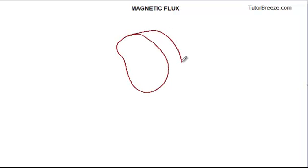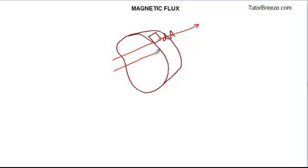Now let us consider a surface — let me just draw a surface over here. We have this closed surface and choose a part of it. This is a surface and we take a small element of area dA on this surface. I will mark this as dA and let us also draw the magnetic field lines, because we want to find the flux through this surface. The magnetic field is crossing this area — these are the magnetic field lines and we denote this by the magnetic field vector B.